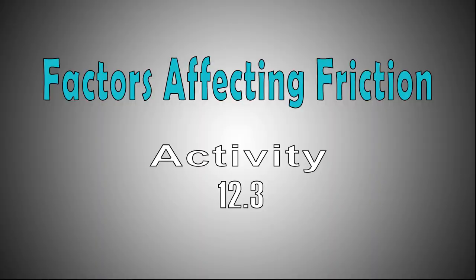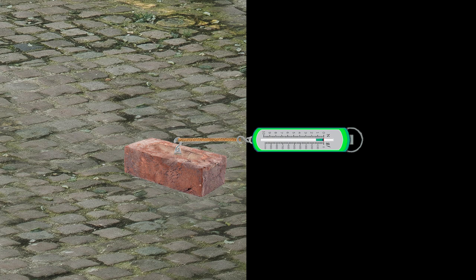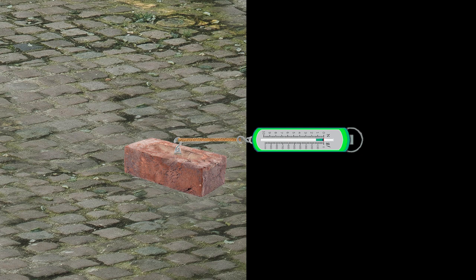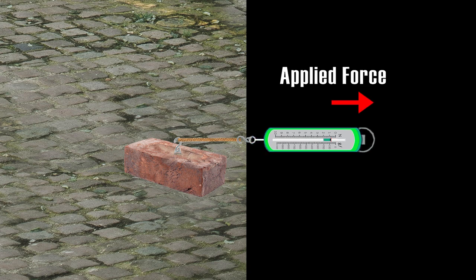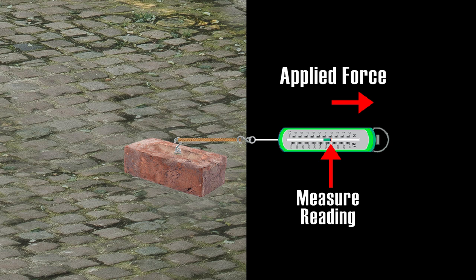Now let's jump into Activity 12.2, Factors Affecting Friction. As you can see on your screen, this is a brick, this is a spring balance, and this is a rope which connects the brick with the spring balance. What you have to do is tie a string around a brick, pull the brick using a spring balance, apply some force, and note down the reading on the spring balance when the brick just begins to move.